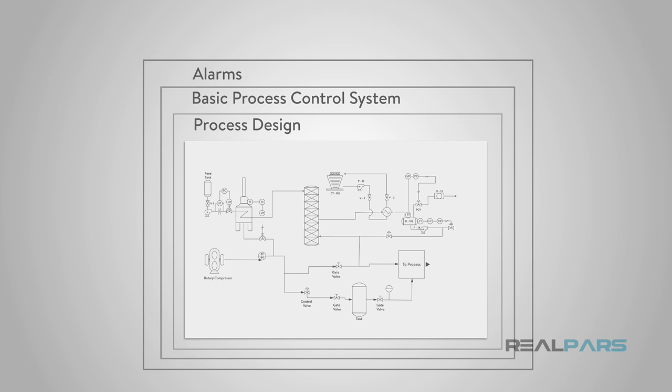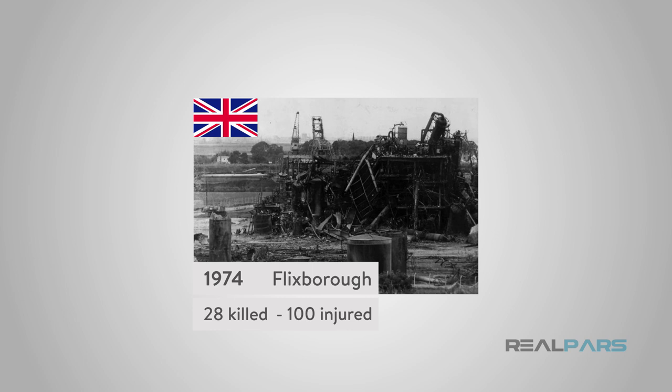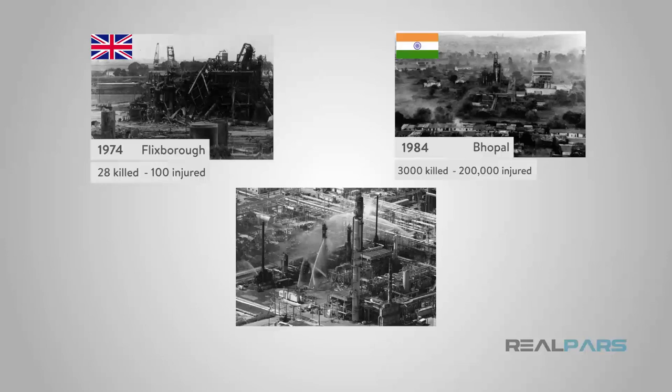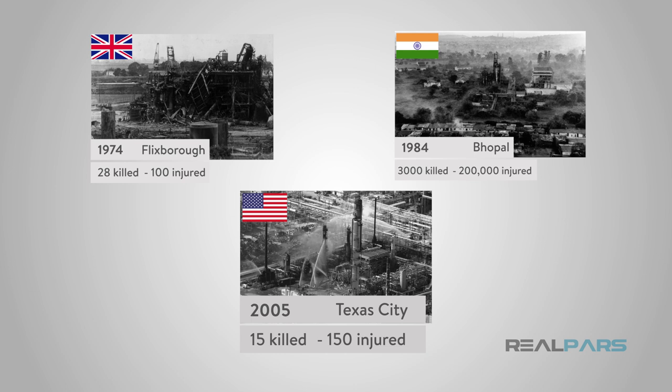Alarms are configured to allow the operators to react to abnormal conditions and take corrective actions before a risk becomes an accident. Even with all of these layers of protection in place, the risks may still be too great to prevent an accident from happening. In 1974, a gas leak in a fertilizer plant in Bhopal, India, killed over 3,000 and injured 200,000. More recently, in 2005, an explosion at a Texas City refinery killed 15 and injured more than 150. All three of these plants had control systems, alarms, and trained operators.